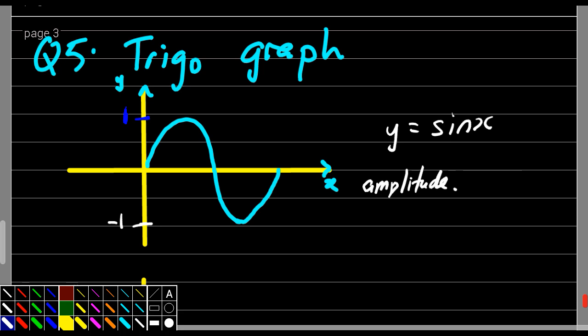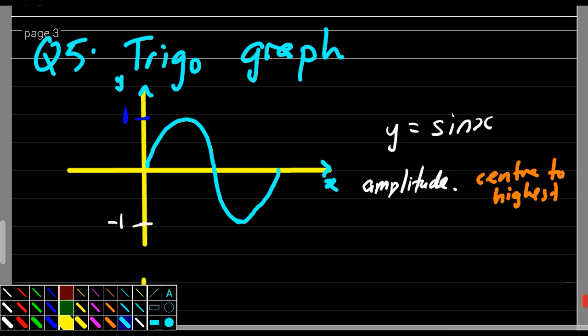Amplitude means from center to highest point. Okay, let me use another color. Amplitude means from center to highest point. So, where is the center to highest point? Let me use this color to find amplitude. Center to highest, let me use pink color. To find amplitude, we say center. Where's the center of this graph? It's actually here. Where's the highest point? It's actually here. So, where's the amplitude in this case? 1. So, amplitude equals to 1.